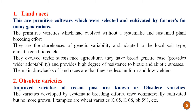Now we will go in detail with the famous types of plant genetic resources. First are the landraces — primitive cultivars which were selected and cultivated by farmers for many generations. These are primitive varieties which evolved without systematic and sustained plant breeding efforts. They are a storehouse of genetic variability, adapted to local soil types and climatic conditions. They evolved under subsistence agriculture, have a broad genetic base, provide wider adaptability, and high degree of resistance to biotic and abiotic stresses. Their main drawback is that they are less uniform and low yielding.